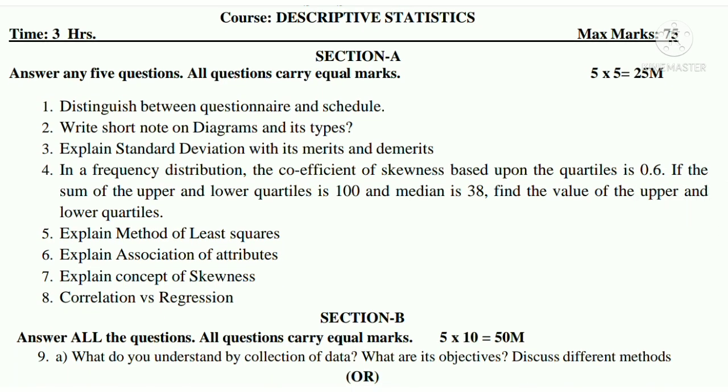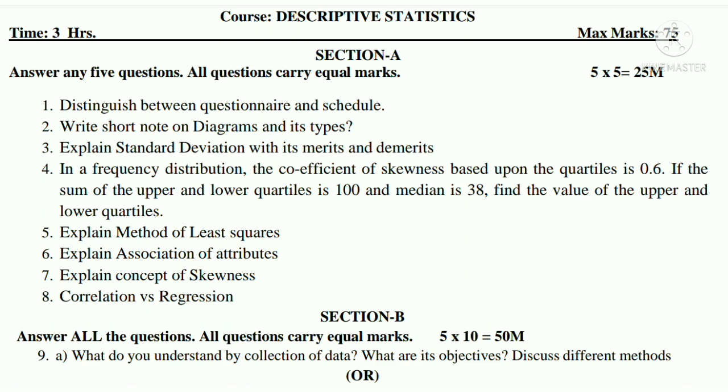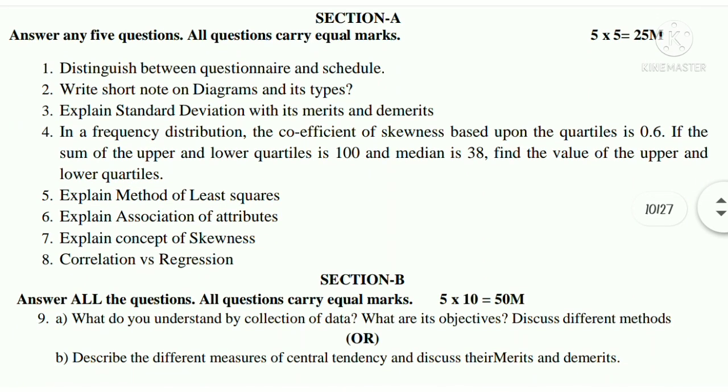Section B, ninth A: what do you understand by collection of data? What are its objectives? Discuss different methods. Ninth B: describe different measures of central tendency and discuss their merits and demerits.